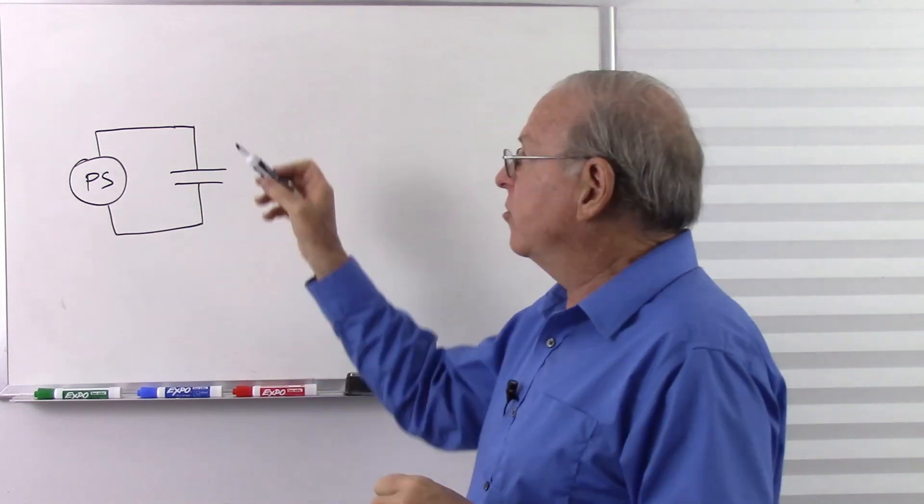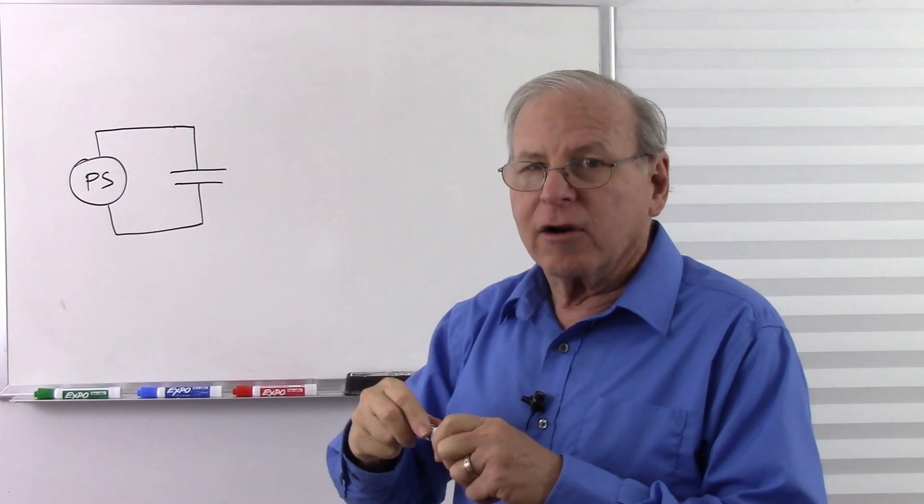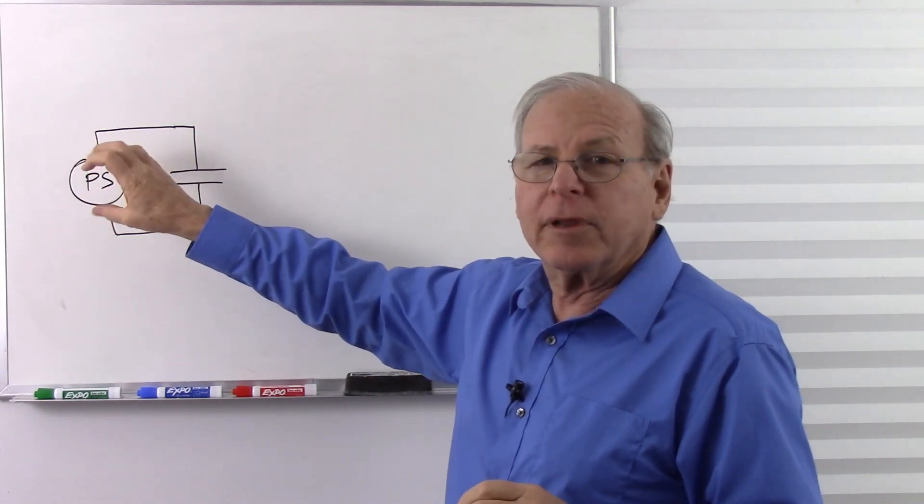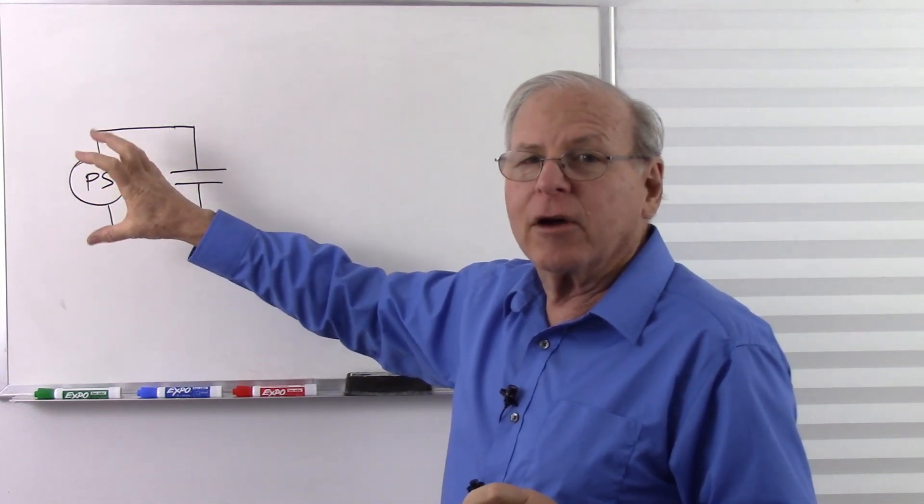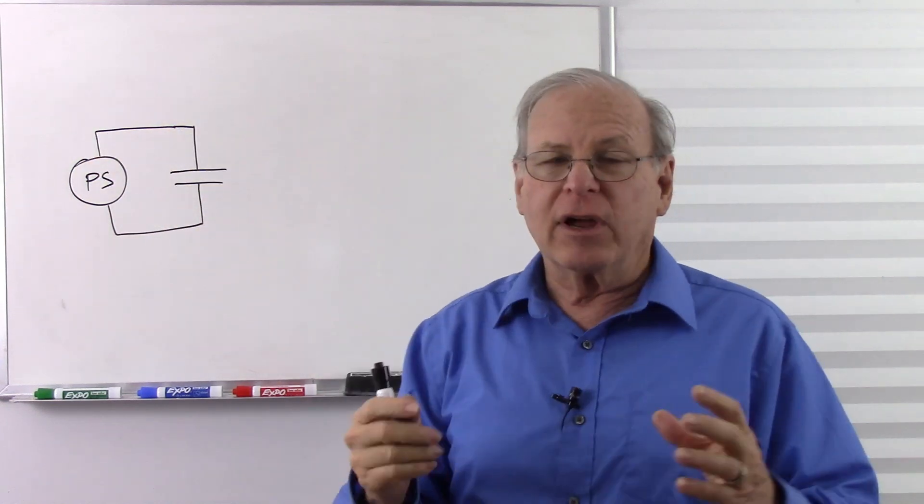And what this does is it smooths out the voltage because our voltage may have some ripple in it. The voltage is changing at regular intervals and we need to smooth that out. And the capacitor acts like a reservoir.